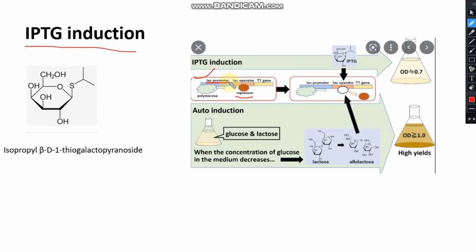Bacteria express genes in a polycistronic manner because they have only one promoter that regulates all of the genes. The lac promoter is basically for uptake of lactose, which bacteria use for energy purposes and for transcription and translation. When there is no lactose in the environment, this system is turned off because the repressor blocks the lac operator.